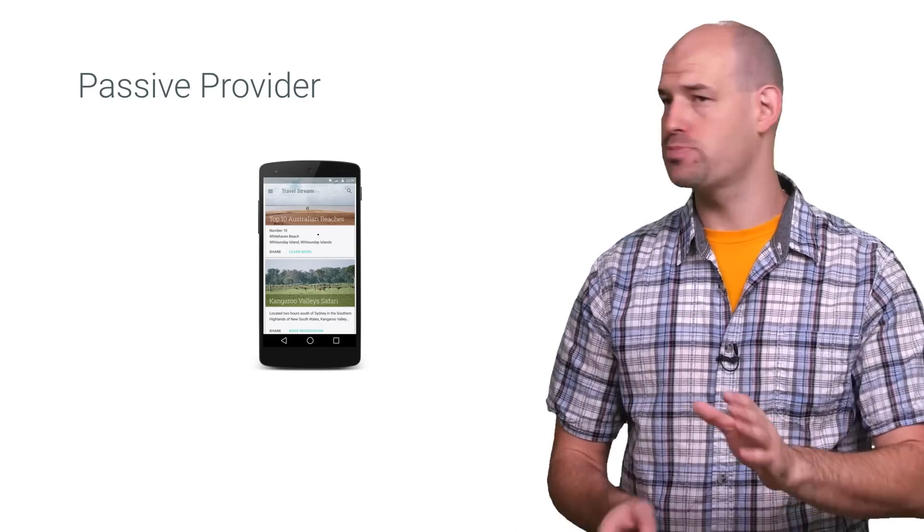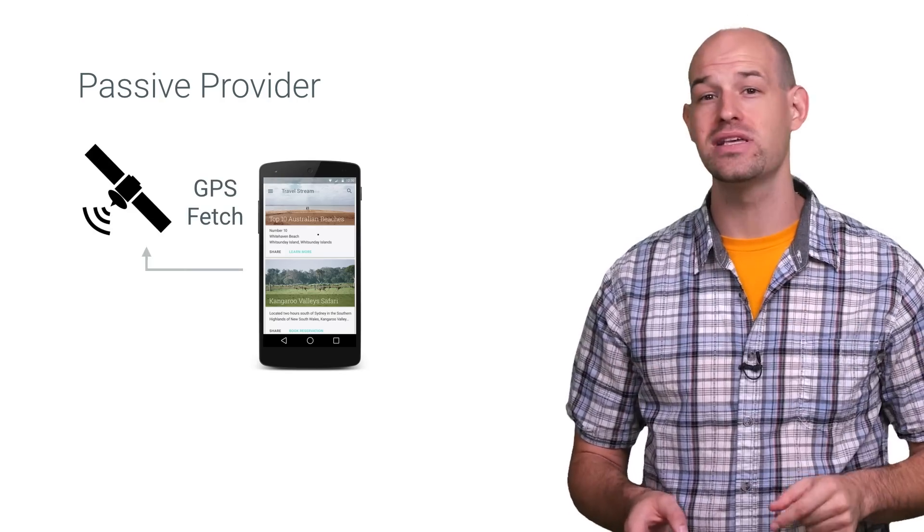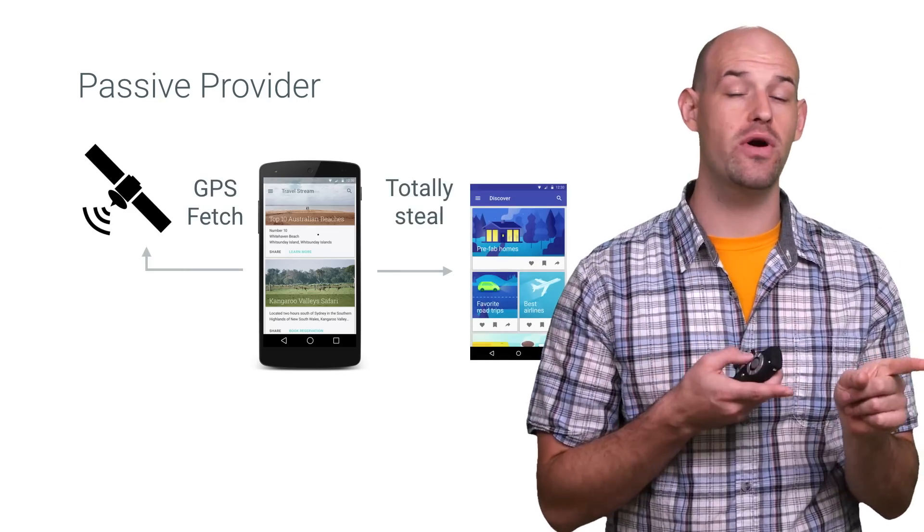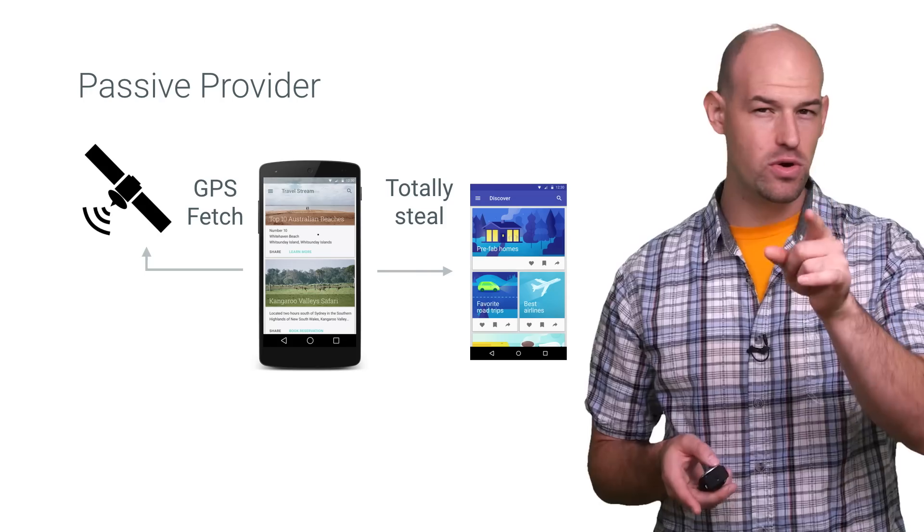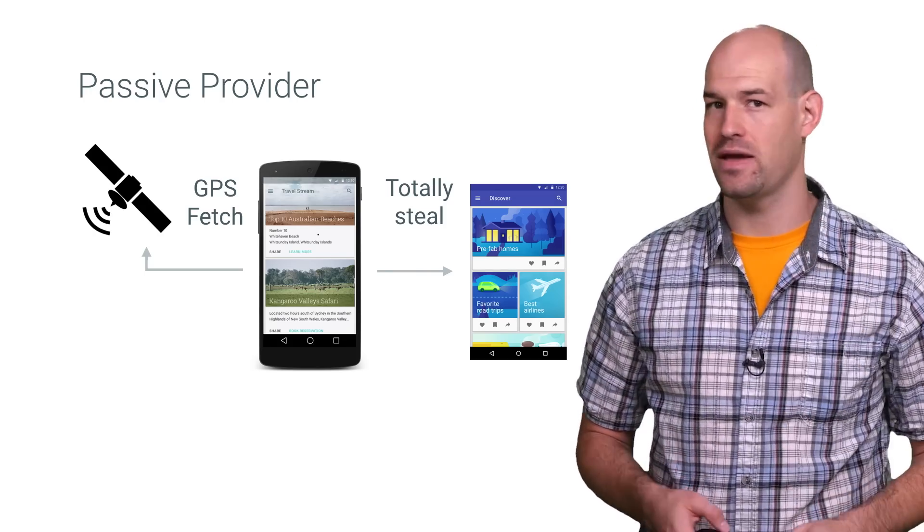There's the passive provider, which is probably the most battery efficient. When some other application makes location requests, the results then get passed along to your app as well. That way, your device isn't sending out multiple location pings and can spend more time saving battery.